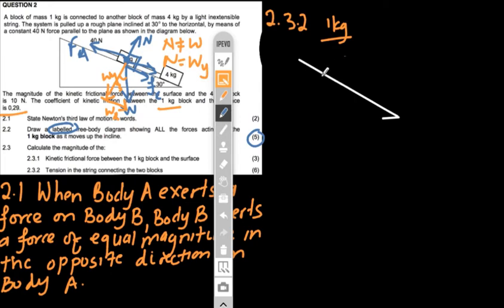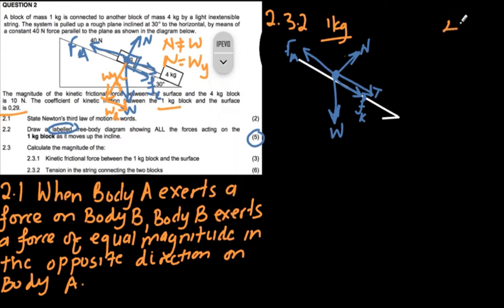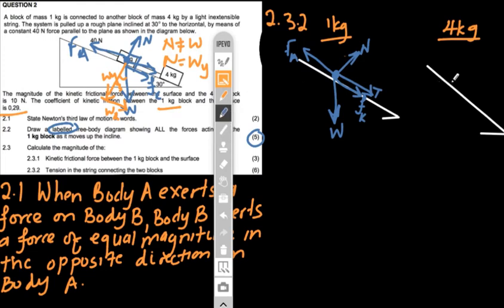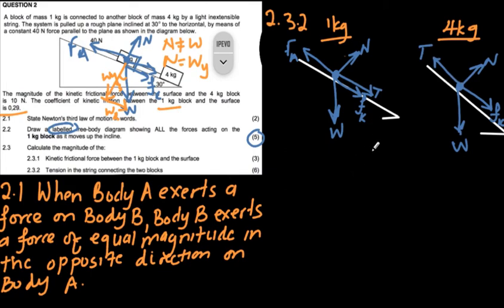For the 1 kg block, I draw the slope and represent it as a dot: normal force, weight vertically downwards, applied force, tension parallel to the plane of motion, and kinetic friction parallel to the plane in the opposite direction to motion. For the 4 kg block, also on the slope: normal force, weight vertically downwards, kinetic friction, and tension. Those are our two free body diagrams.